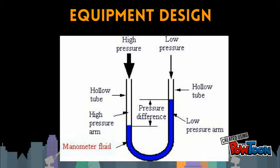When the ends of the manometer tube are exposed to different pressures, the high pressure pushes down on the fluid and the level drops, forcing the fluid level to rise in the low pressure arm. The pressure difference can be determined from the difference in height.